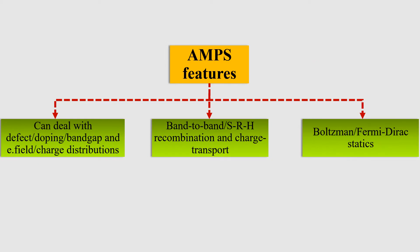Some features of this software include: it can deal with defect density in the bulk of the material and at the interfaces of the device. It can handle doping concentration of n-type, p-type, intrinsic layers, and also the band gap, electric field, and charge distribution. The software can also tell us about band-to-band, Shockley-Read-Hall recombination, transport of charges, and Boltzmann and Fermi-Dirac statistics.